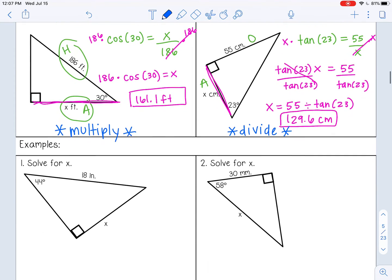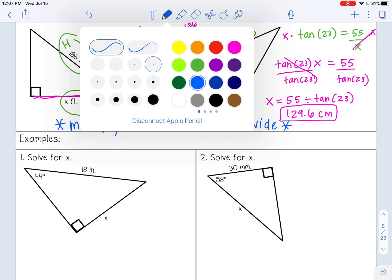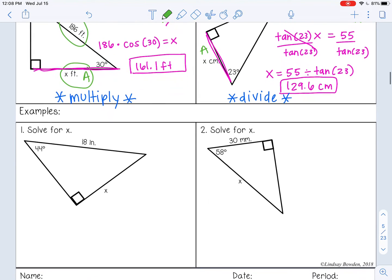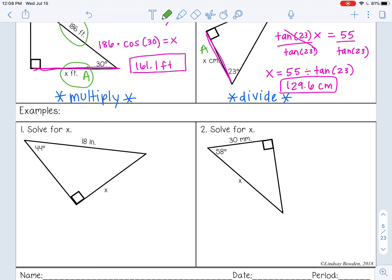Let's try a couple other examples together. Number one - pause the video now and see if you can label your sides and determine the trig ratio to use. So 18 is my hypotenuse, x is opposite. We don't need the adjacent side because there's nothing written there. So in this problem, you should have chosen sine.